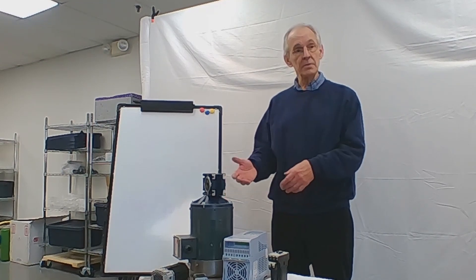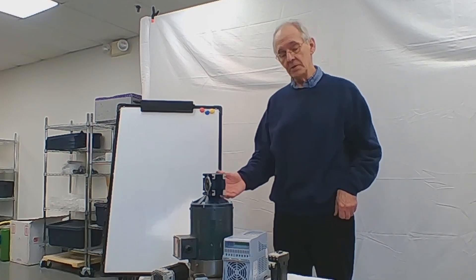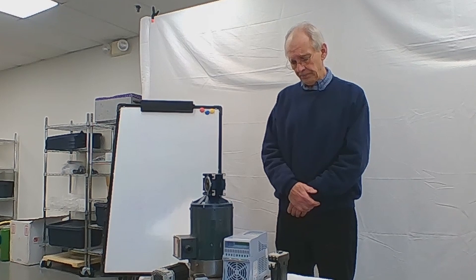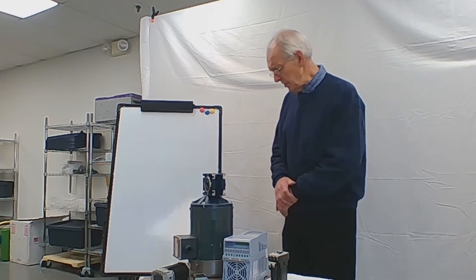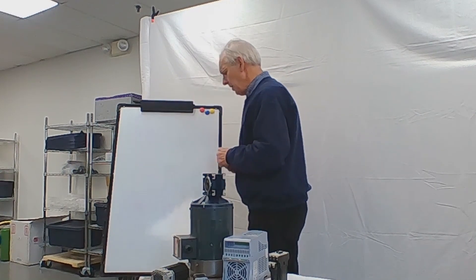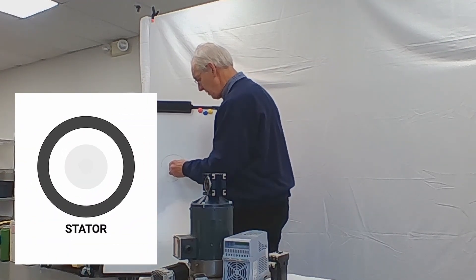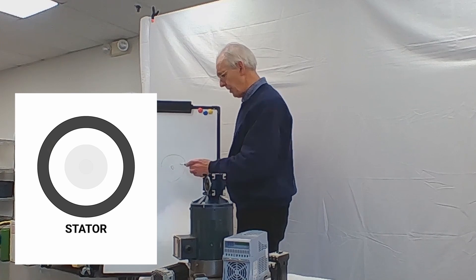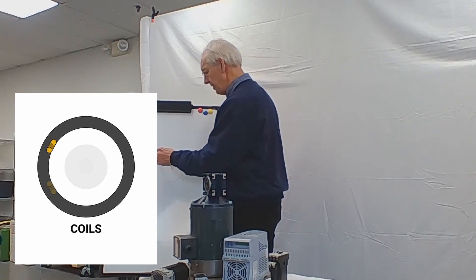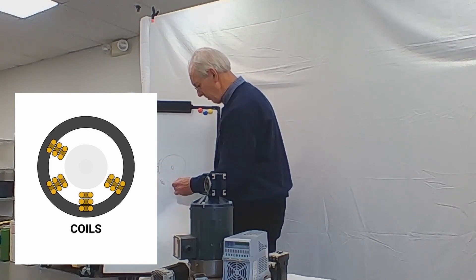The number one reason for failure of an induction motor is basically the bearings. So the way the motor works — there's a little sketch here — there's what's called a stator, which is the part inside the motor that rotates the shaft. And then around that there's a set of coils in the outer housing, and the coils are arranged around the motor like this.